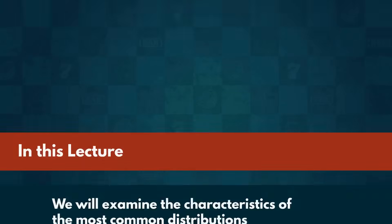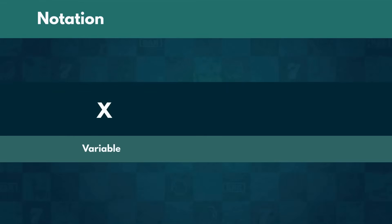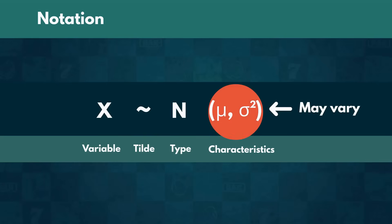Before we get into the specifics, you will need to know the proper notation we implement when defining distributions. We start off by writing down the variable name for our set of values, followed by the tilde sign. This is superseded by a capital letter depicting the type of the distribution and some characteristics of the data set in parentheses. The characteristics are usually mean and variance, but they may vary depending on the type of the distribution.